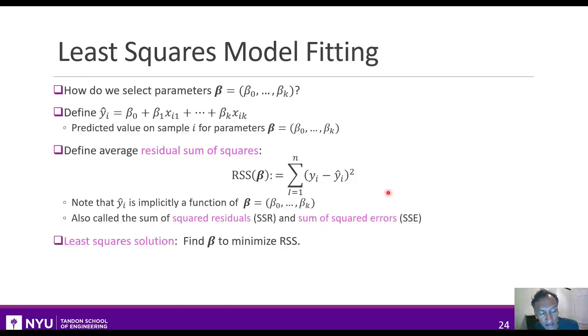The key idea, then, once we have this function, is called the least square solution, which is simply to find the beta to minimize this residual sum of squares. That is, we want to find the beta that makes the y hat i's, the predicted values, as close as possible to the measured values, at least in the squared sum case.